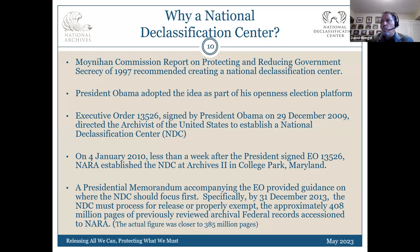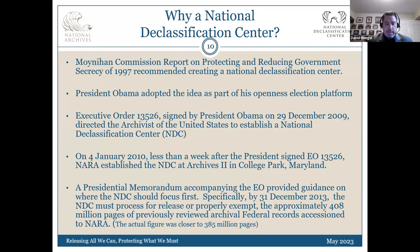President Bush's EO 13292 modified Clinton's order but did not completely change it. President Obama issued a brand new executive order. He changed the way we were doing declassification and ordered the establishment of a National Declassification Center. He put a memo out that said once this declassification center is established, it must eliminate the backlog at the National Archives within three years. That really put a lot of pressure on it. We had gotten word from his NSC staff that this was coming, so we started about a year before the order came out planning for a national declassification center.